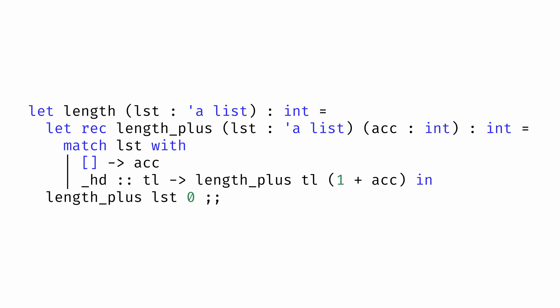Inside of length plus, we match the list. If it's empty, then the result is whatever the value of the accumulator is. And if it has a head and a tail, then the length is going to be length plus of the tail and the value we get after incrementing the accumulator by one.